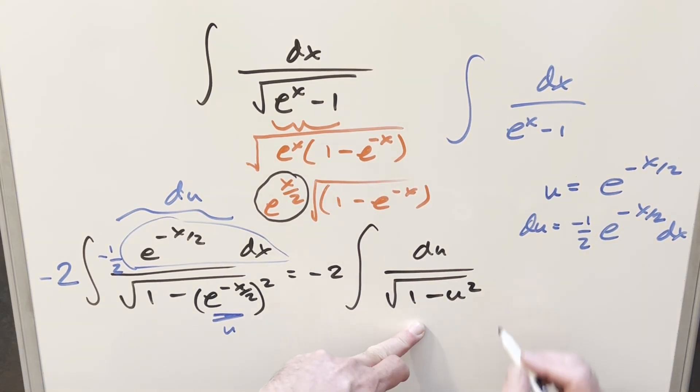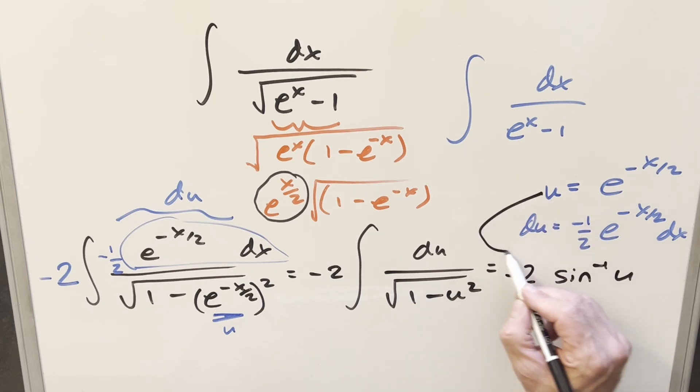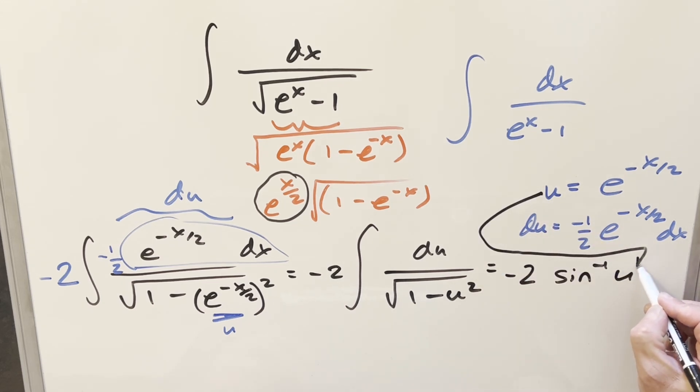But then what we're left with is a very common integral. This is just going to be arcsine. So we can integrate in terms of u, write this as arcsine of u, and now we just need to back-substitute in order to finish this thing off.